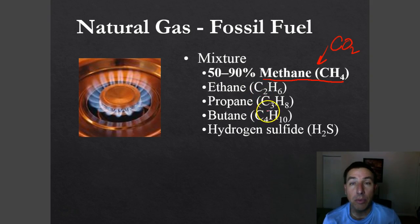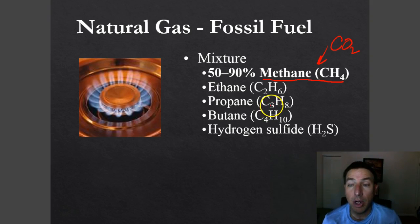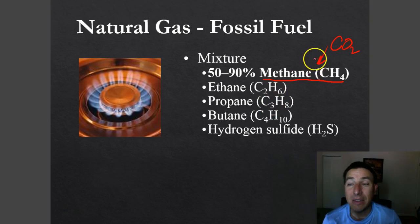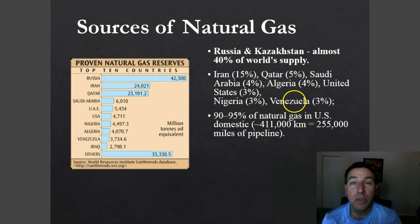Some other fuels will produce two CO2 molecules when burned, others three, and when burning gasoline — which has a whole lot of carbons — you get a whole lot of carbon oxides. So one of the good things about natural gas is that it puts out a lot less CO2.